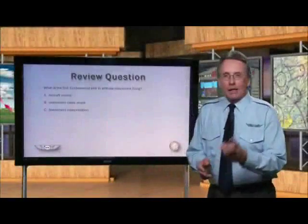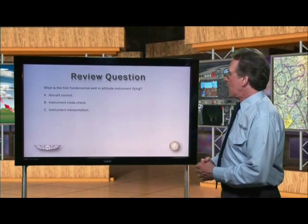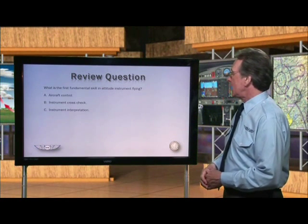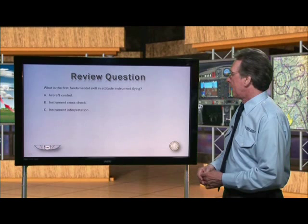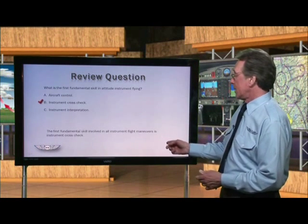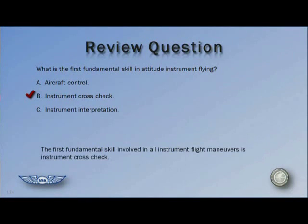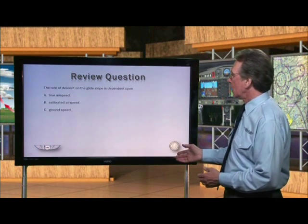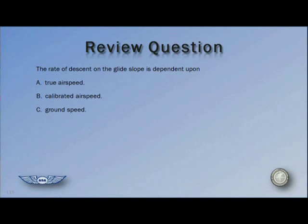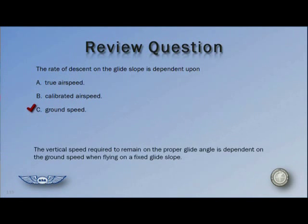Let's take a look at a couple of review questions. Question one: What is the first fundamental skill in attitude instrument flying? The answer is B — the first fundamental skill involved in all instrument flight maneuvers is instrument cross-check. Question two: The rate of descent on the glide slope is dependent on which factor? The answer is C — the vertical speed required to remain on the proper glide angle is dependent on ground speed when flying on a fixed glide slope.